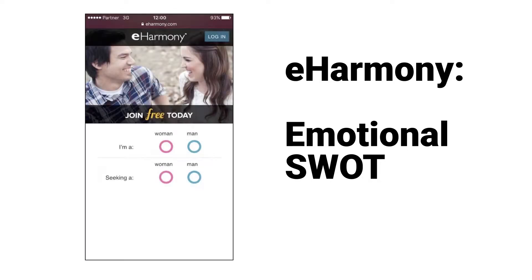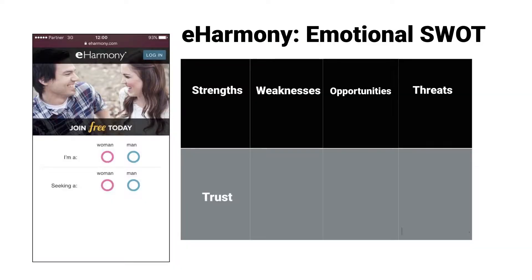As an example, I've chosen eHarmony. eHarmony is a very well-known dating site that we can use for emotional SWOT. Because they are very well known, I'd say that their strength is trust — everyone knows them so you can trust that they're going to help you and do everything that you need. On the other hand, a quick look is going to show us that their biggest weakness is that they're just like everyone else. They have nothing that stands out.